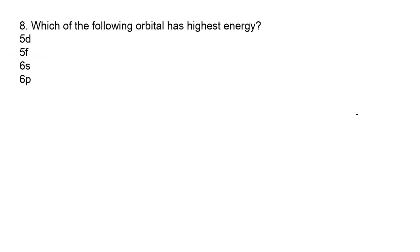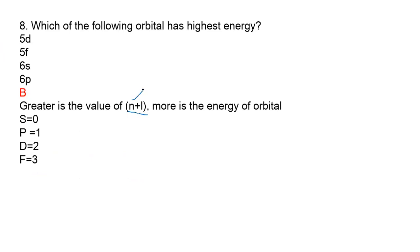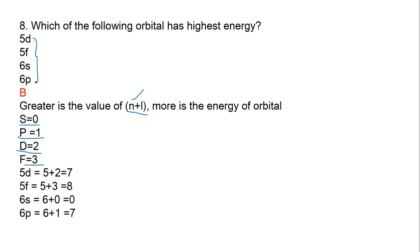Which orbital has the highest energy? Greater the value of n+l, the higher the energy. For orbital quantum numbers: s → l=0, p → l=1, d → l=2, f → l=3. Calculating n+l: 5d = 5+2 = 7; 5f = 5+3 = 8; 6s = 6+0 = 6; 6p = 6+1 = 7. The highest n+l value is 8, for 5f. Therefore 5f has the highest energy. Option B is the correct answer.